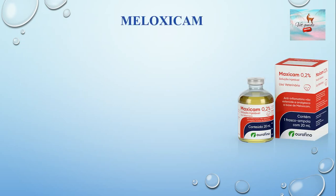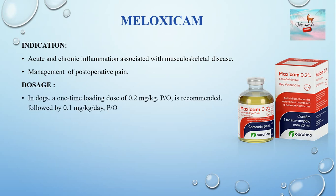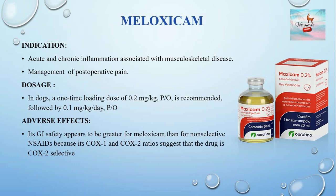Meloxicam is used when animals present with acute and chronic inflammation associated with musculoskeletal disease, and also for management of postoperative pain. In dogs, a one-time loading dose of 0.2 mg/kg orally is recommended, followed by 0.1 mg/kg orally. Its gastrointestinal safety appears greater than non-selective NSAIDs because its COX-1 to COX-2 ratio suggests the drug is COX-2 selective.